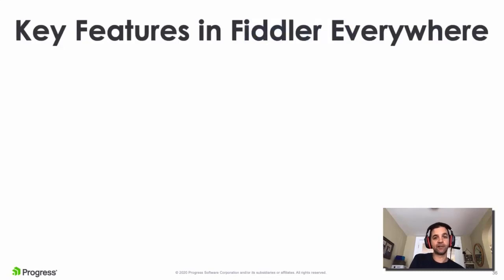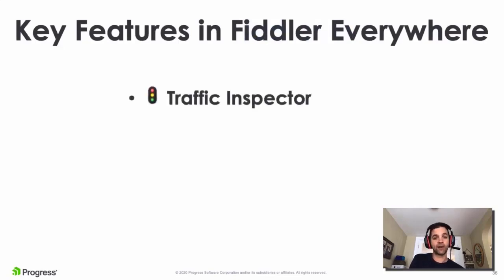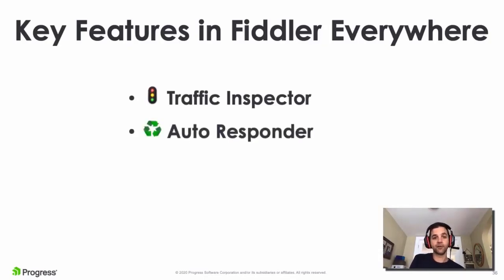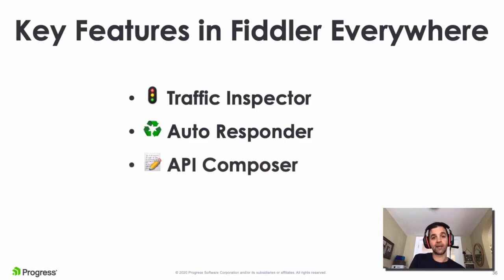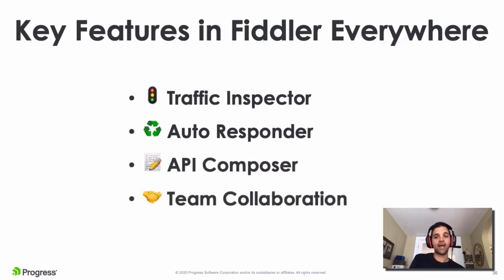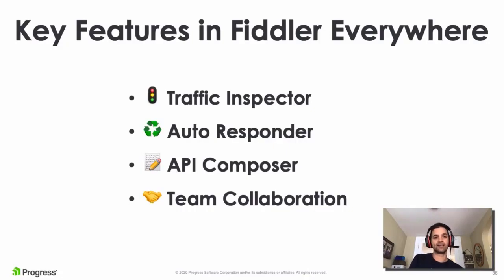The key features of Fiddler Everywhere we're going to look at today in more detail are: the network traffic inspector for looking into the details of requests and responses, the autoresponder for creating customized rule sets, the API composer for composing and testing API requests within Fiddler, and finally the team collaboration features - which might be my favorite feature of Fiddler Everywhere and will be improved quite a bit in the coming weeks.